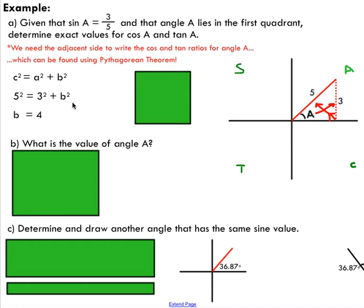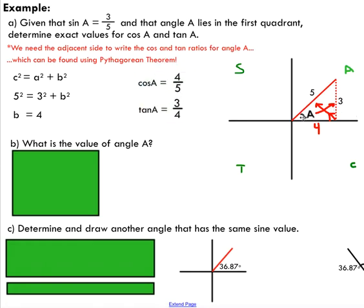We've determined the adjacent side of this triangle is 4. From here, we can very easily state the cos and tan of that angle A just by using our knowledge of trigonometry. We can say adjacent over hypotenuse would be 4 over 5, and the opposite over the adjacent would be 3 over 4.